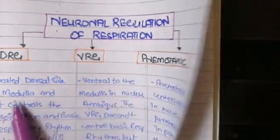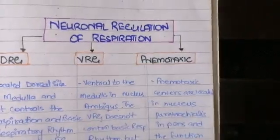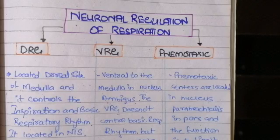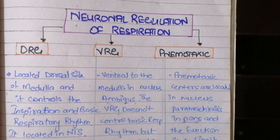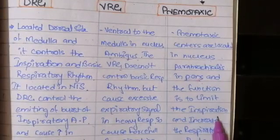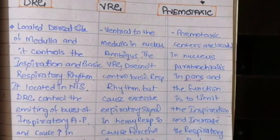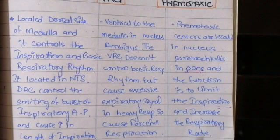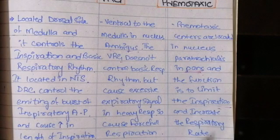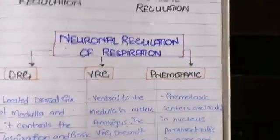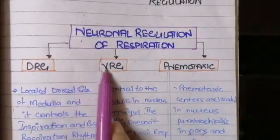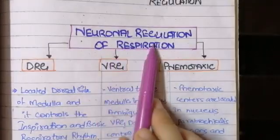The third neuronal mechanism controlling the regulation of respiration is the pneumotaxic centers. The pneumotaxic centers are different from the dorsal and ventral respiratory centers. They are located in the nucleus parabrachialis in the pons — not in the medulla, but in the pons. Their function is to limit inspiration. They cause a decrease in inspiration but an increase in respiratory rate, because when inspiration is limited there is an increase in the breathing rate, ultimately increasing the overall respiratory rate. These three groups and centers together control the neuronal regulation of respiration.